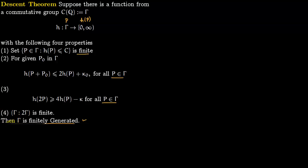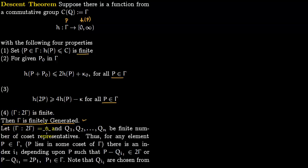We start with condition four: the index [γ : 2γ] is finite, say equal to n. Let q₁, q₂, …, qₙ be the corresponding coset representatives. Thus for any element P in γ, P lies in some coset, so there is an index i₁ depending on P such that P − q_{i₁} lies in 2γ.